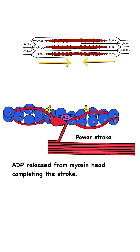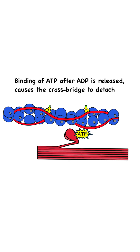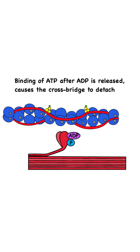In order to reset for another power stroke, a new ATP molecule must bind to the myosin head. This binding causes the crossbridge to detach, and the myosin head is released from actin. When ATP is present, it is hydrolyzed again, re-energizing the myosin head and resetting it for another cycle.